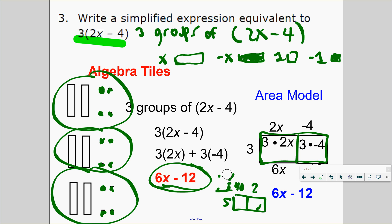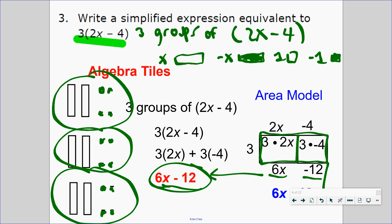So let's look at this one. It's three groups of 2x minus 4. How do you find the area of this first rectangle? I multiply 3 times 2x. Three groups of 2x is 6x. 6x minus 12, same answer. So do you prefer the algebra tiles or do you prefer the area model? You could say three groups of 2x plus three groups of negative 4.